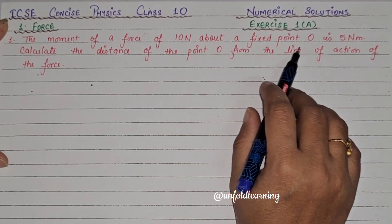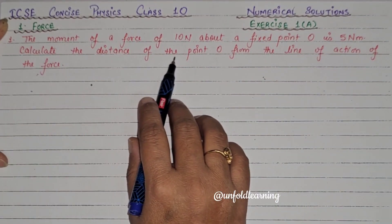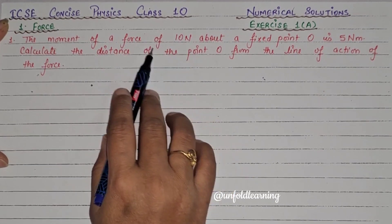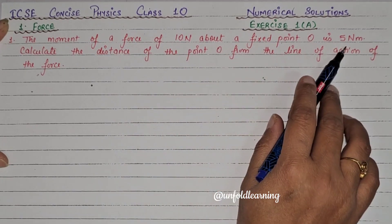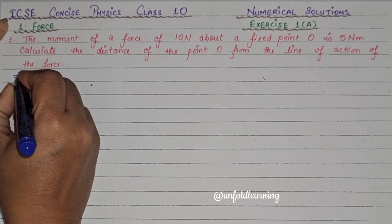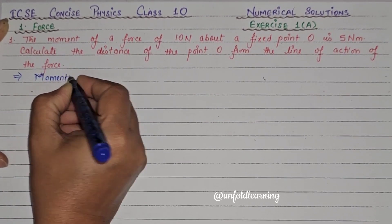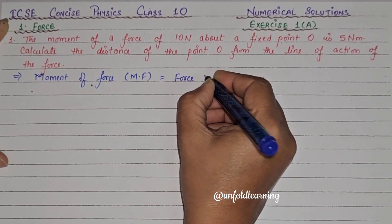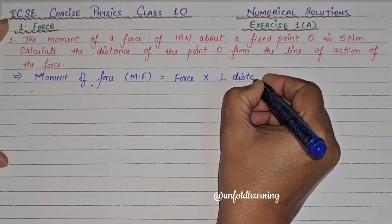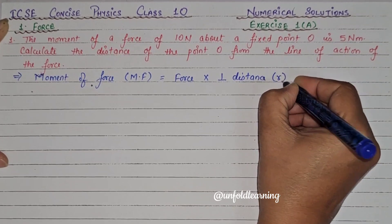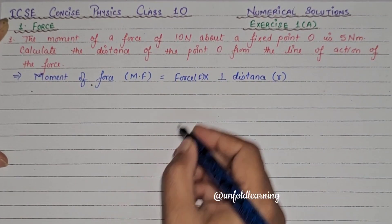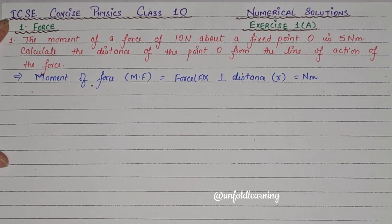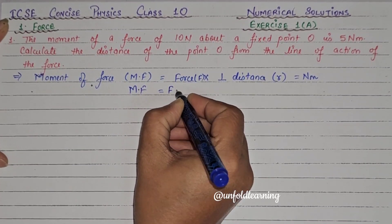First question: a moment of force of 10 N about a fixed point O is 5 Nm. Calculate the distance of point O from the line of action of force. We know that moment of force equals force applied multiplied by the perpendicular distance, so in short: moment of force = F × R.